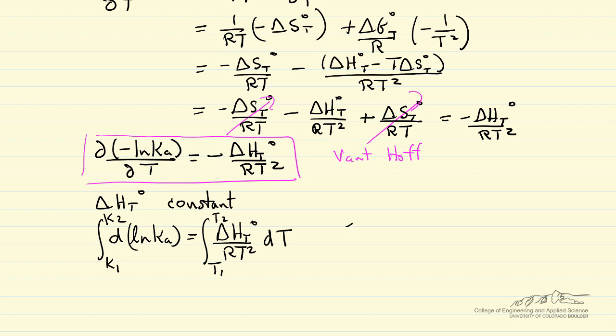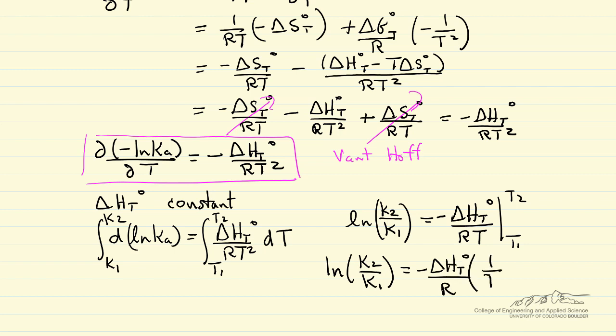The left side just becomes the log of K two over K one, and the right side, since delta H is constant, doing the integration from T one to T two, the log of equilibrium constant at two temperatures is just related to constant value for heat of reaction, one over T two minus one over T one. This equation is certainly simpler and it's not a bad approximation.